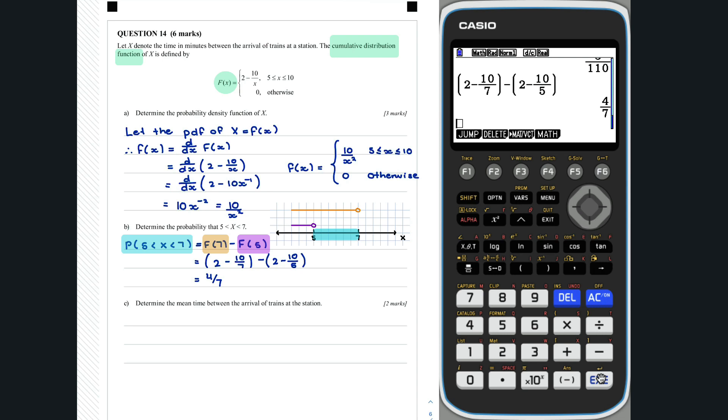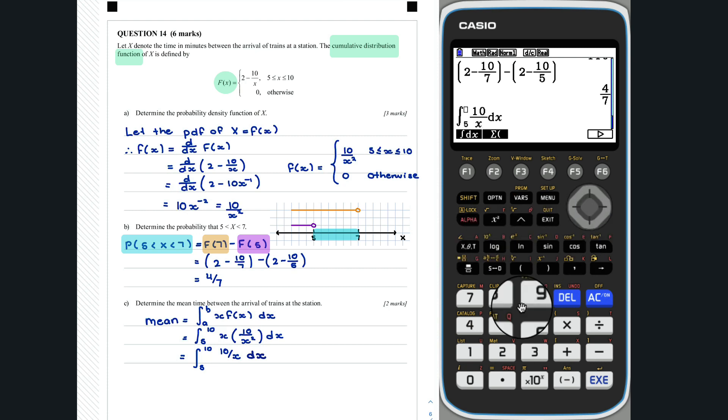Question 14c. The mean time of arrivals can be evaluated using the formula mean is equal to the integral from a to b of x f of x dx. In this case, the lower bound of the integral is 5 and the upper bound is 10. So, this integral can be evaluated in the run mode. Therefore, the mean time between arrivals is 6.93 minutes. Don't forget your units.